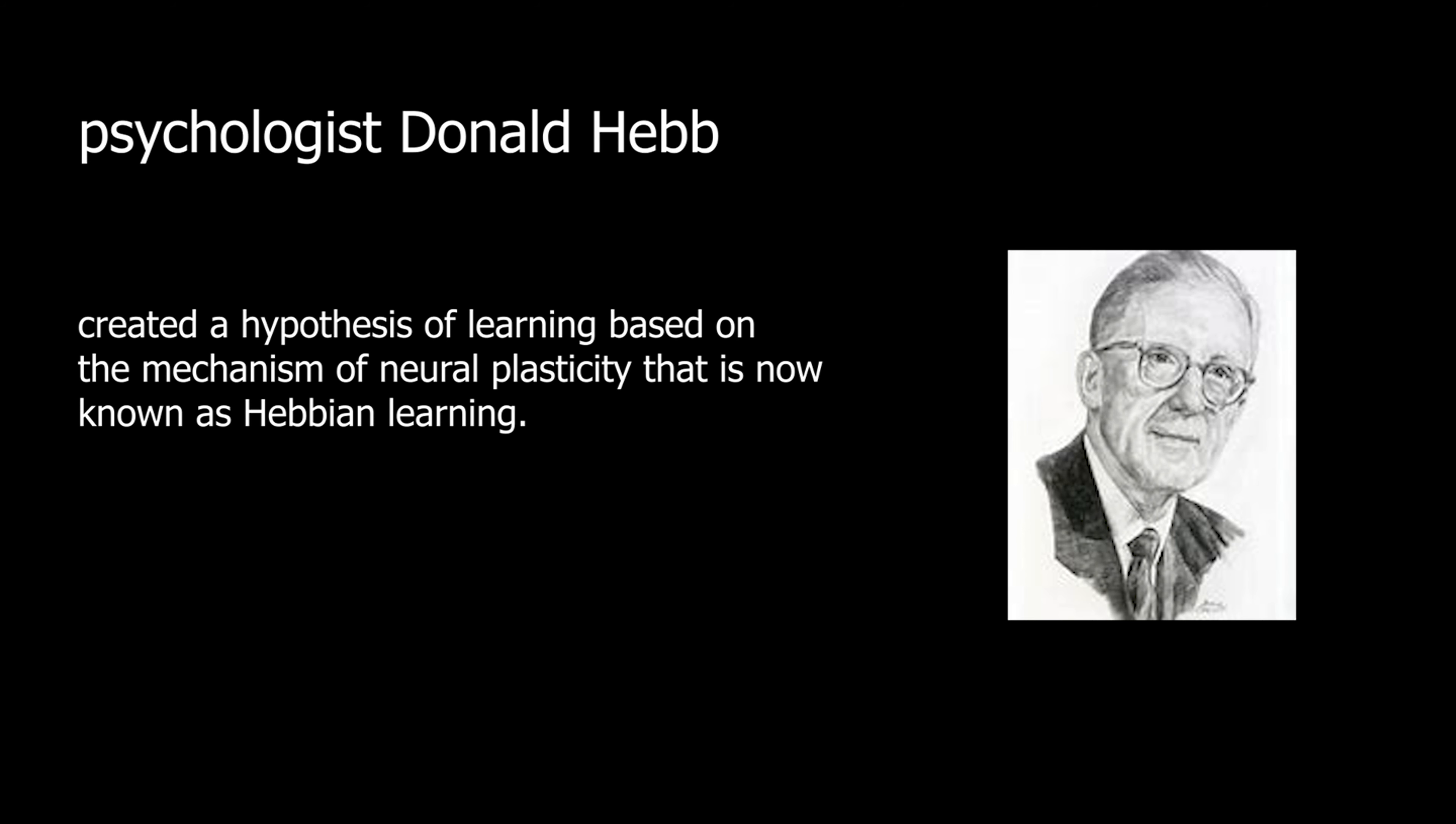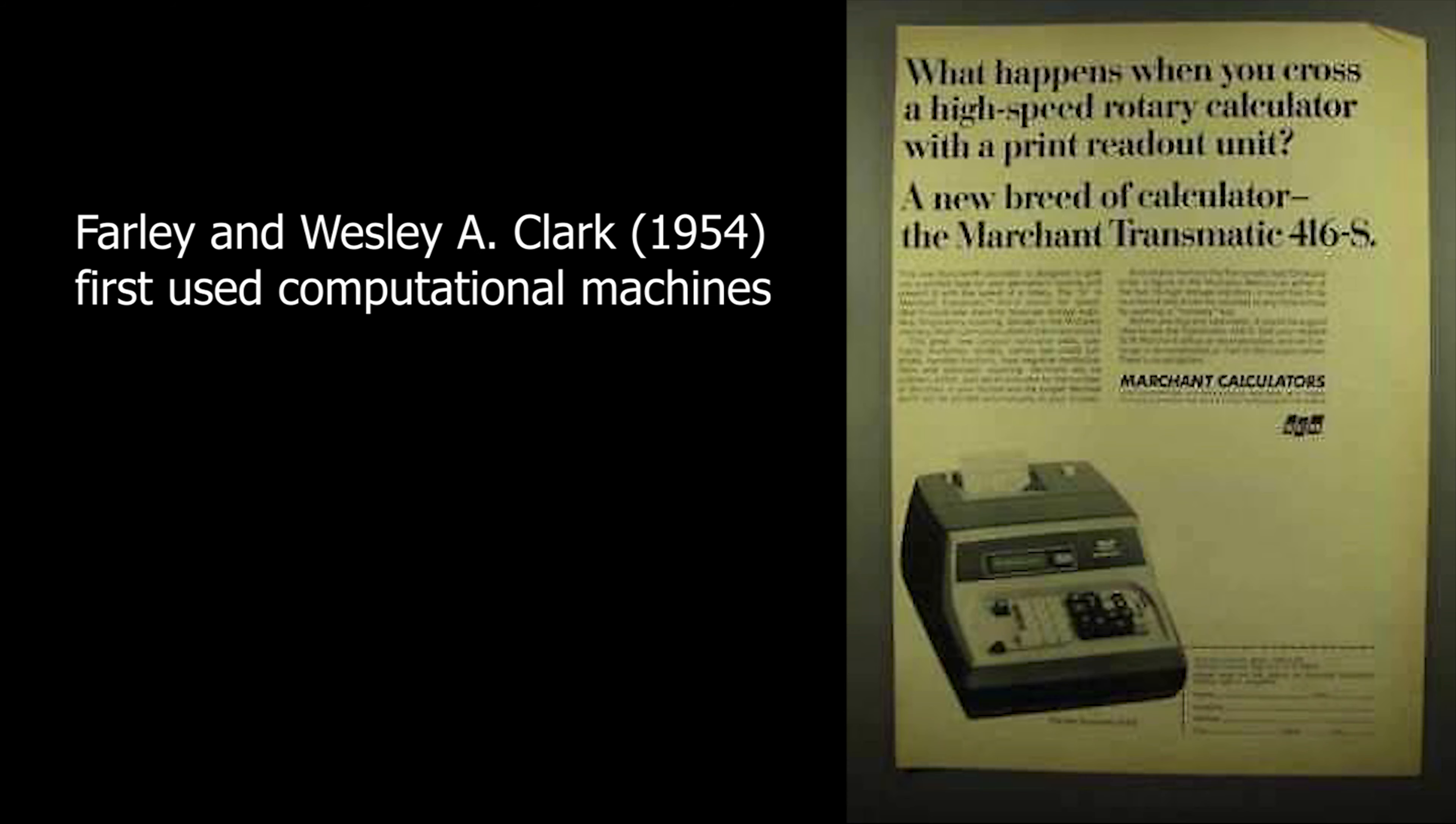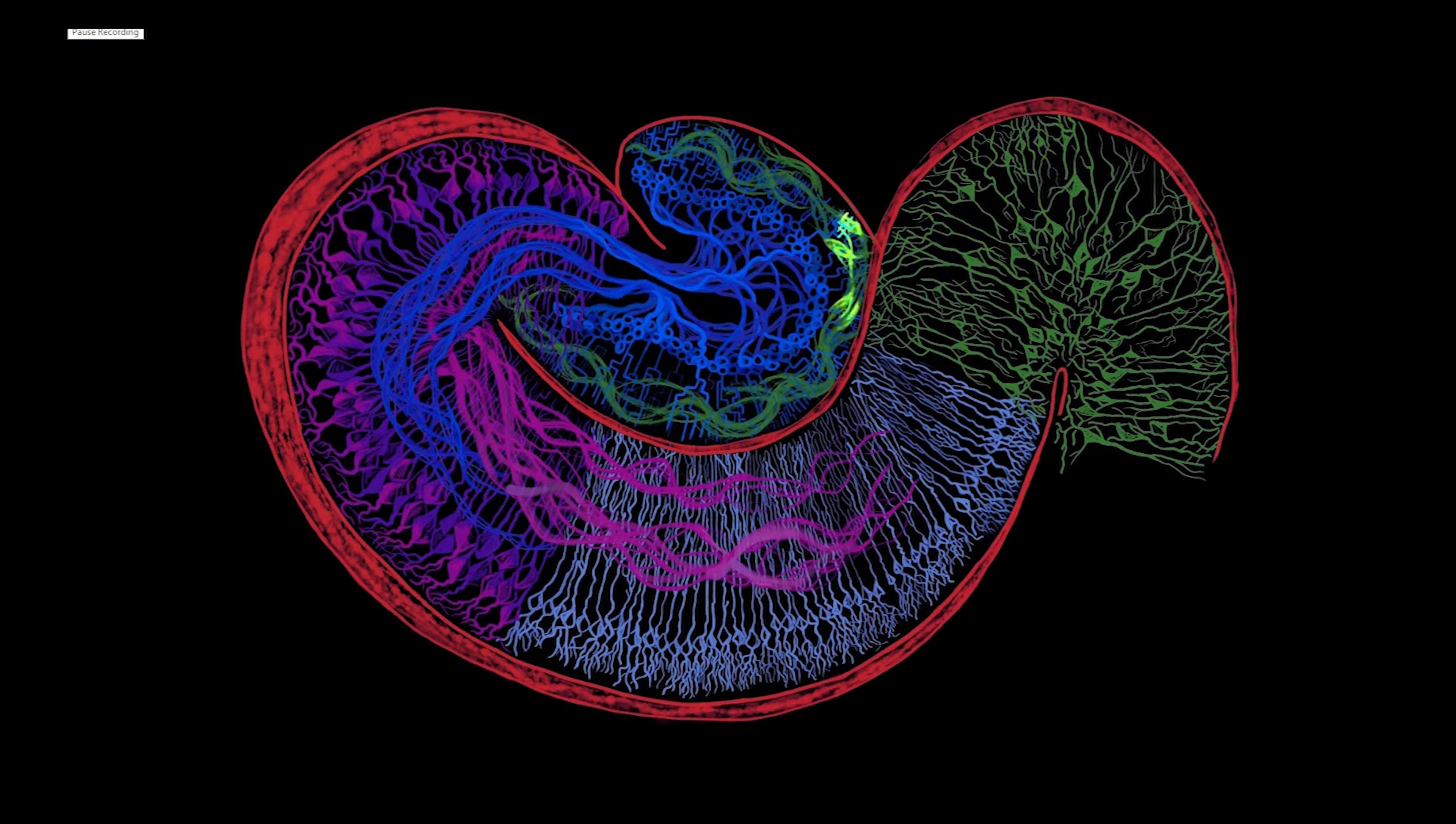Warren McCulloch and Walter Pitts in 1943 opened the subject by creating a computational model for neural networks. Farley and Wesley A. Clark in 1954 first used computational machines, then called calculators, to simulate a Hebbian network. Rosenblatt in 1958 created the perceptron.